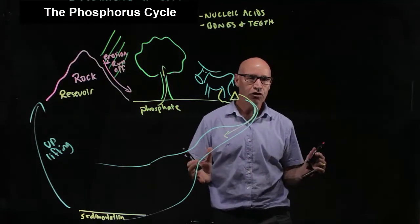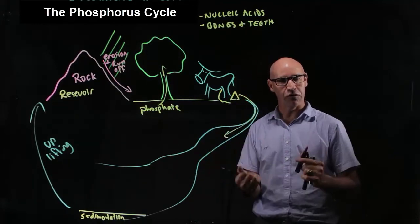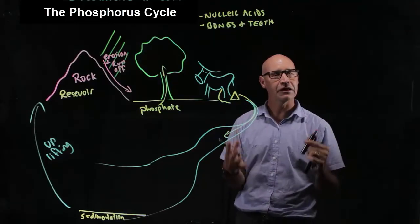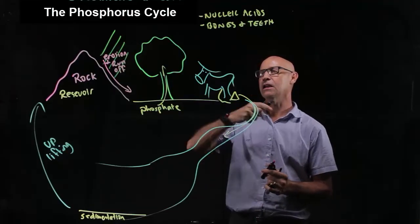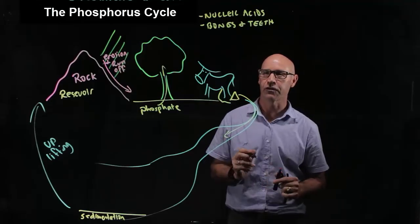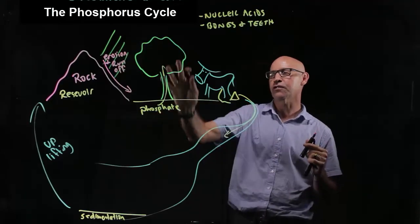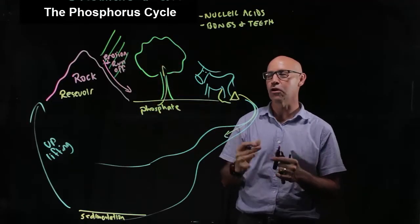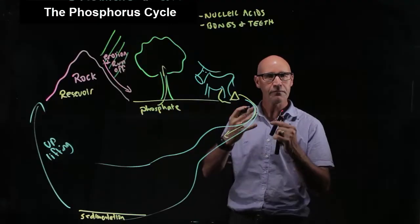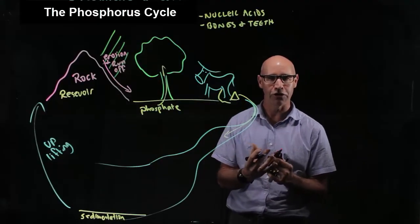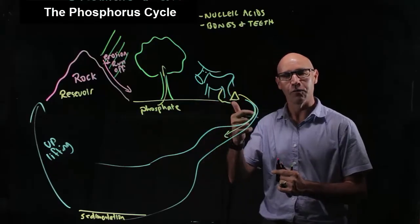Now, in terms of human impact, just like we saw with the nitrogen cycle, humans have played a massive role in disrupting the phosphorus cycle. Phosphorus is such an important element for plant growth. It's a very large component of fertilizer, along with nitrogen.